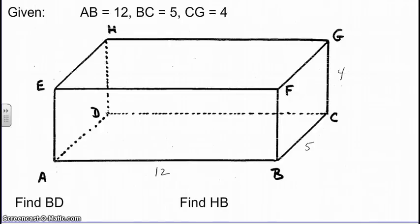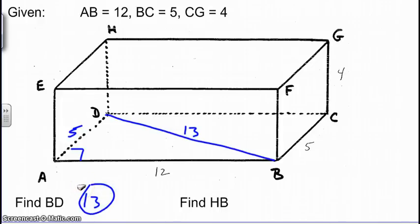Again, using the same example, same information. Here we're looking for BD. Now BD is the diagonal of the base. So we have another right angle there at DAB. Knowing AB is 12, BC, which is congruent to FD, we have a triple, a 5, 12, 13 triangle. So BD would be 13.